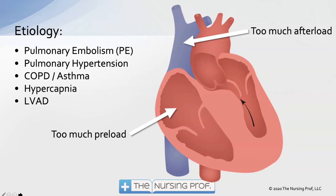Some etiologies of right heart failure include pulmonary embolism, a very common cause. A blood clot gets stuck in one of the pulmonary arteries — not in the airways, but in the vasculature. So when you listen to the lungs, you may not hear any change at all with a pulmonary embolism because the clot is in the vasculature. If we've blocked one of those big vessels, the right side of the heart has to pump against that obstructed vasculature, increasing the pressures it must work against — too much afterload.